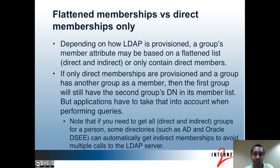Another important thing to know about your LDAP environment is whether flattened memberships are provisioned or direct memberships only. This may be another question that your Grouper administrator can answer, but the difference may influence how you make membership queries. If flattened memberships are provisioned, then if one group is a member of another group, the first group's membership list in LDAP will contain the members of both groups. But if only direct memberships are provisioned and a group has another group as a member, the first group will not have members of the second group in its membership list unless they happen to also be direct members. The first group will still have the second group's DN in its member list, but those indirect members may not appear.